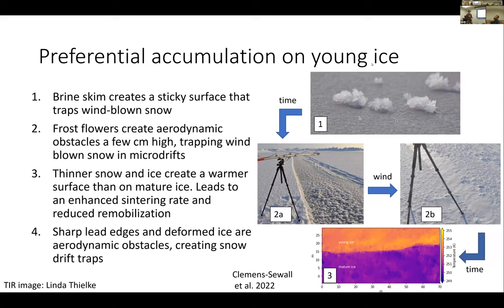Based on our fieldwork, we identified four mechanisms responsible for this preferential accumulation on young ice. First, when new ice freezes, we get a brine skim on the surface that creates a very effective sticky snow trap for windblown snow. Second, frost flowers create small aerodynamic obstacles — between two measurement periods with a blowing snow event, we effectively filled in the snow on a very small lead up to the thickness of the frost flowers. Third, we saw preferential accumulation persist even above the height of the frost flowers, which we suspect is due to enhanced sintering — because the snow surface above young or refrozen ice is still warmer than above mature ice.